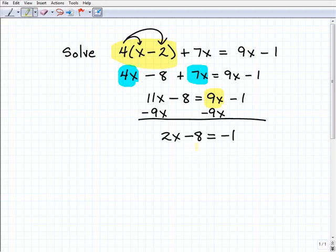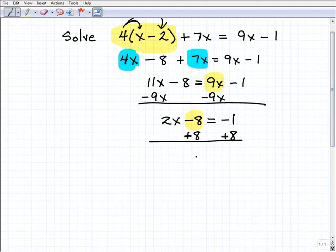Using the same idea, I'm going to move this negative 8 over to the right-hand side by adding 8 to both sides. Now I get 2x equals... this is another area where students mess up. You've got to know your integers: 2x equals 7.